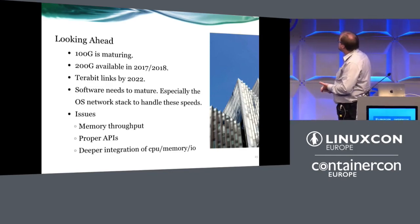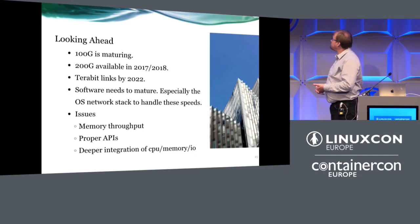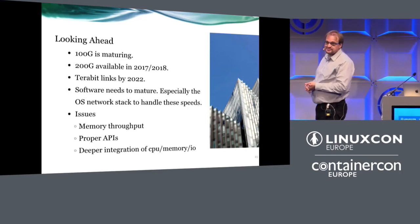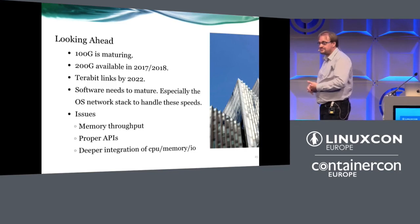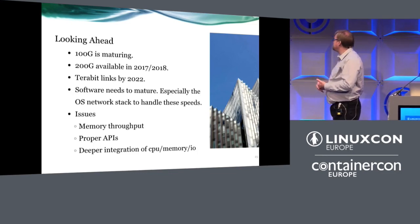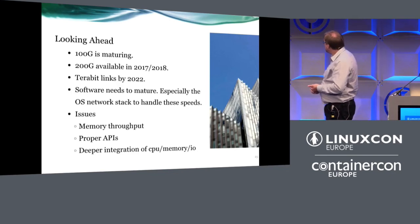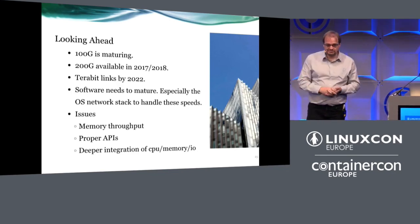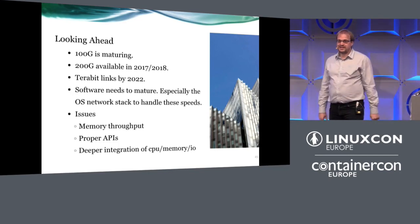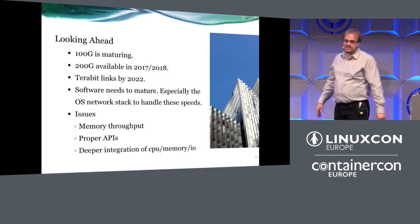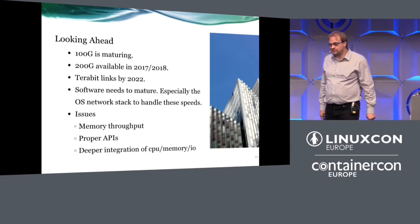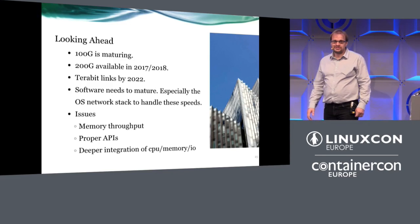Looking ahead: 100 gig is maturing and will be gradually rolled out. We have 200 gig available in 2017-2018 as promised by both vendors, and they want terabit links by 2022. The software really needs to match here — we need the OS network stack to handle these speeds, proper APIs, dealing with memory throughput issues, and deeper integration of CPU and memory. There are thoughts about directly putting the network connection on the die and having the processor deal with data in L1 and L2 caches, since when you can't reach memory at this speed anymore, L1 and L2 cache is faster and you can operate at that level more efficiently — but that requires new processor architectures.